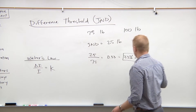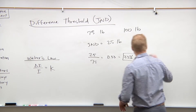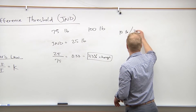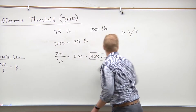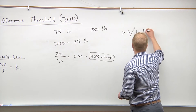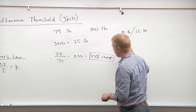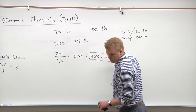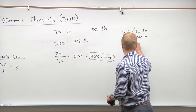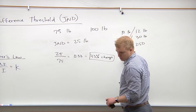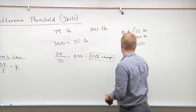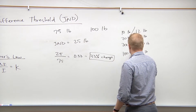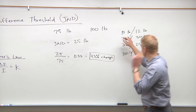Now the answer choices are: A) 10 pounds and 12 pounds, B) 20 and 30 pounds, C) 200 and 250 pounds, and D) 100 and 130 pounds. These are all in pounds. Do you notice any of these answer choices you could immediately eliminate?